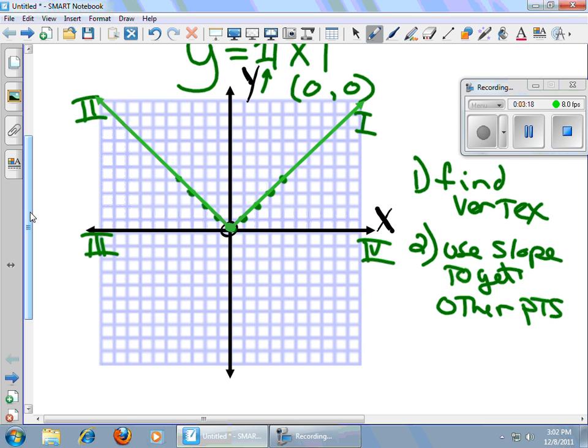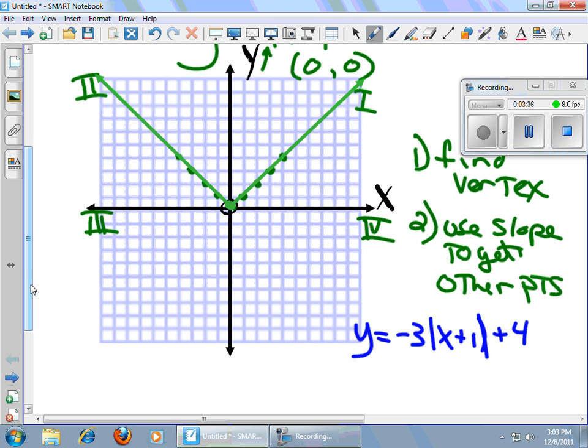Let's take this equation now: Y equals negative three times the absolute value of X plus 1 plus 4. The first thing to do is to find the vertex. To find the x coordinate of the vertex, I look in here. I change the sign. I get a negative one. To get the y coordinate of the vertex, I look right here. I keep the sign. It's a four. So my vertex occurs at the point negative 1, positive 4.